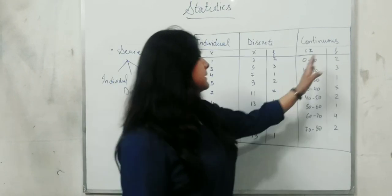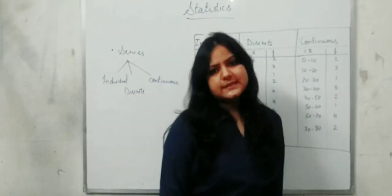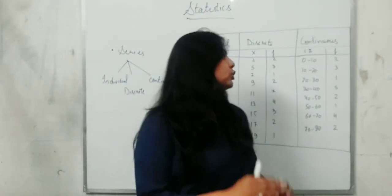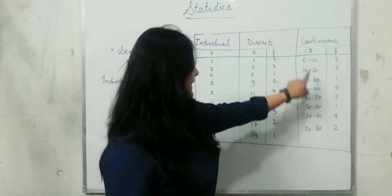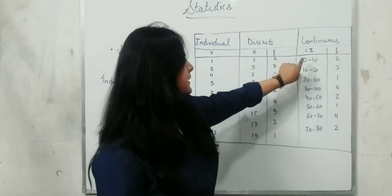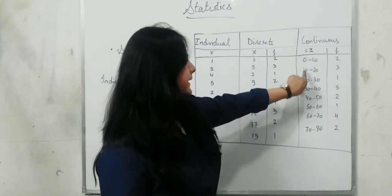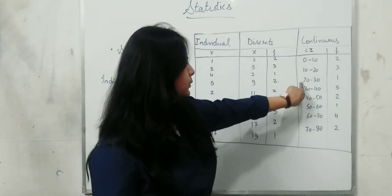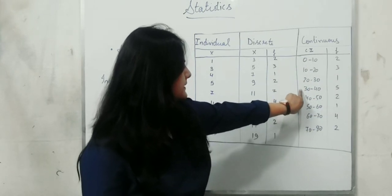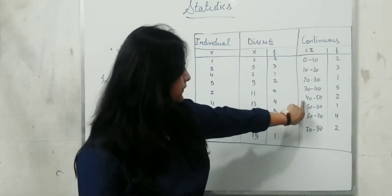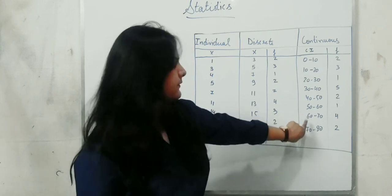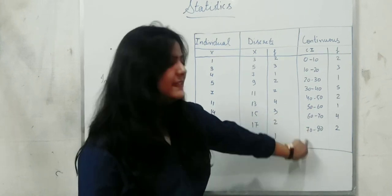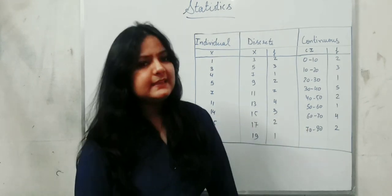Next, we will go to the continuous series. What happens in the continuous series? It is just like this: 0–10, 10–20, 20–30, 30–40, 40–50, 50–60, 60–70, 70–80. This is the continuous series.